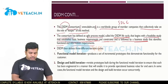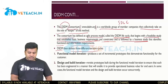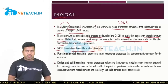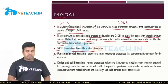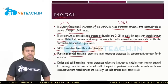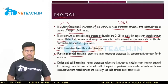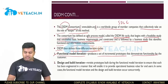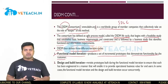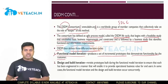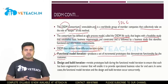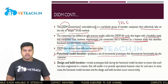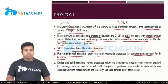DSDM provides three different iterative cycles. The first one is the Functional Model Iteration. In this iteration, you focus on a set of incremental prototypes that demonstrate the functionality for the customer. Each prototype has some requirements and added functionalities. Whatever the customer requires in the early stages is addressed here — that is why it is called functional model iteration.